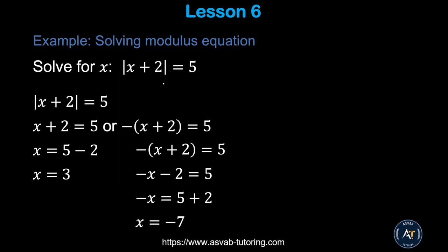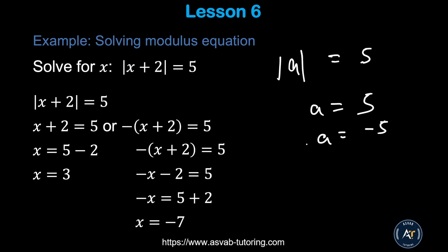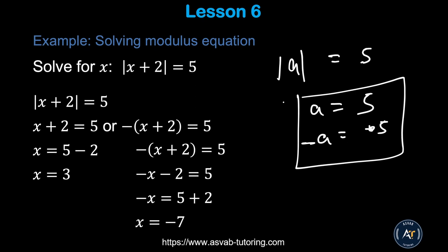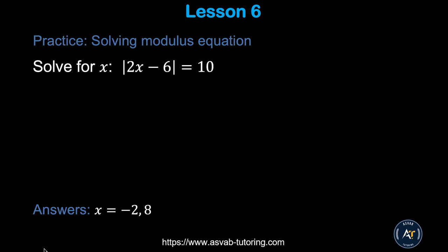Now let's learn how to solve absolute value equations. |a| = 5 means a = 5 or a = −5, since it has both positive and negative cases. For |x + 2| = 5: solve x + 2 = 5 to get x = 3, and x + 2 = −5 to get x = −7. Try the practice problem and confirm your answer.